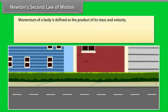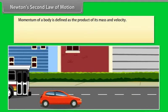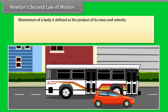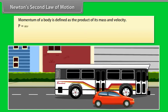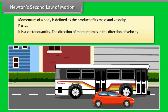Newton's second law of motion — first, we will talk about momentum. Momentum of a body is defined as the product of its mass and velocity: P = mv. It is a vector quantity. The direction of momentum is in the direction of velocity. Its SI unit is kilogram meter per second.